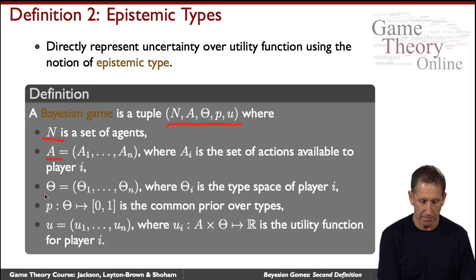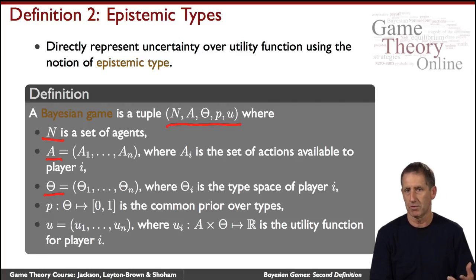And now we have the type, this abstract mathematical object that captures the private information of the agents. So we have a type for each agent.